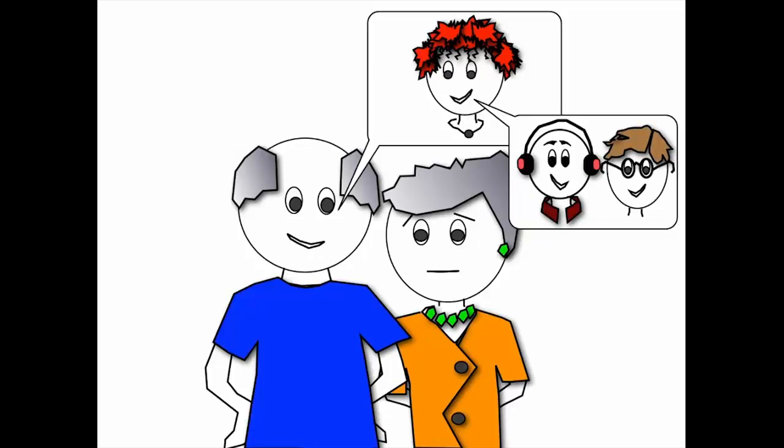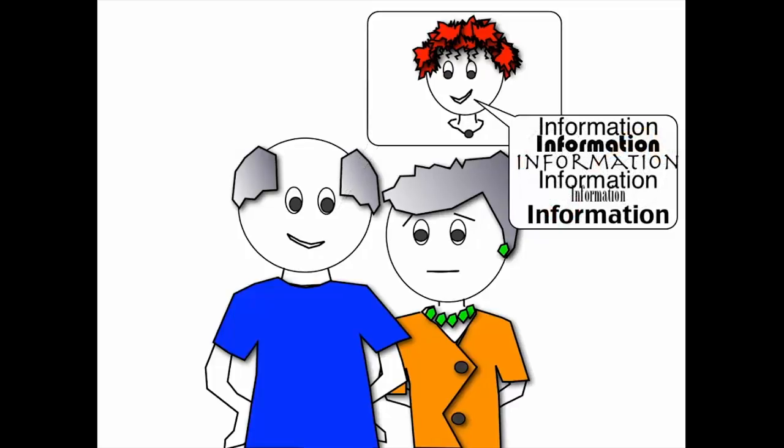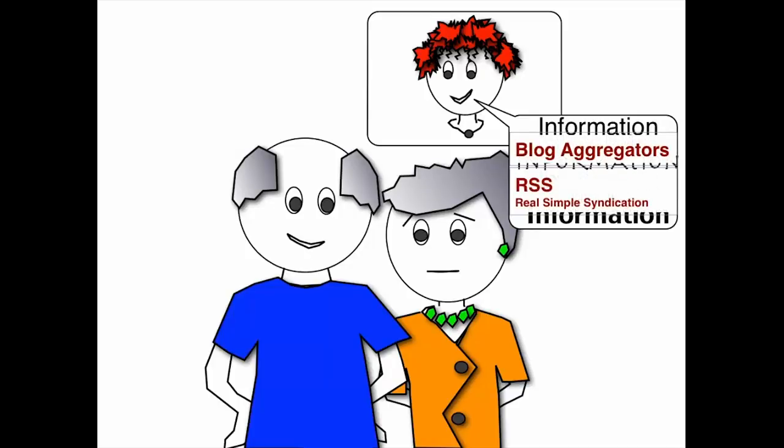She explains that there are many ways to filter the information, and there are technologies that exist to help her make sense of this data, but depending on the type of information, she might have to use a few different technologies. For example, there are blog aggregators, or RSS feeds, that's real simple syndication, that she can use.